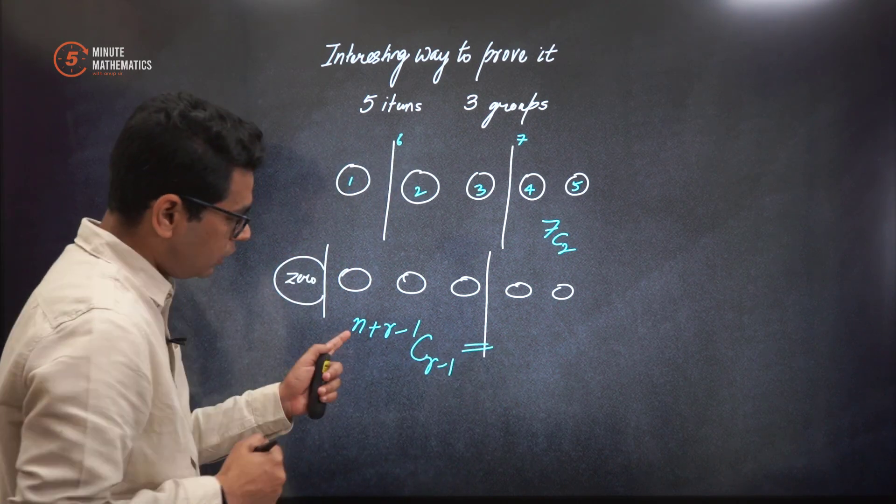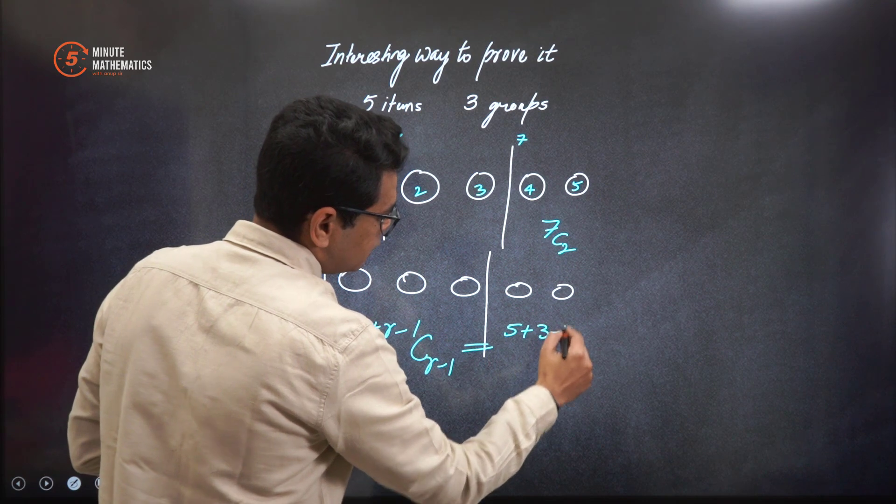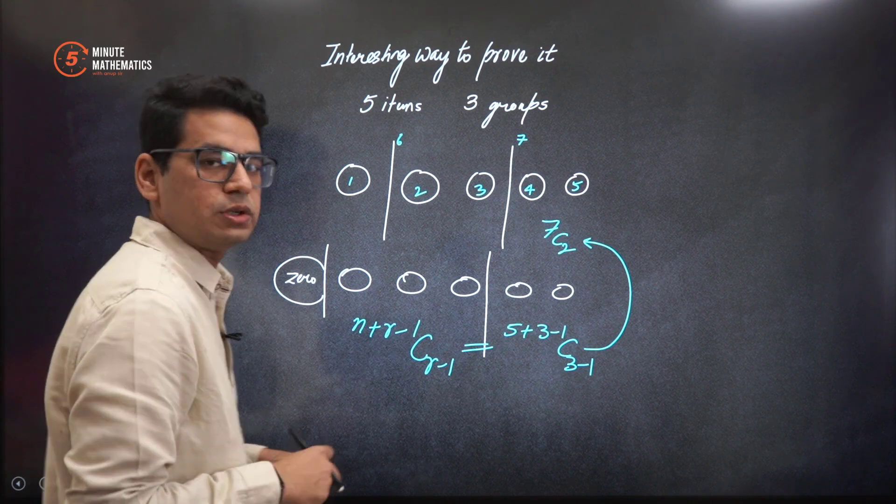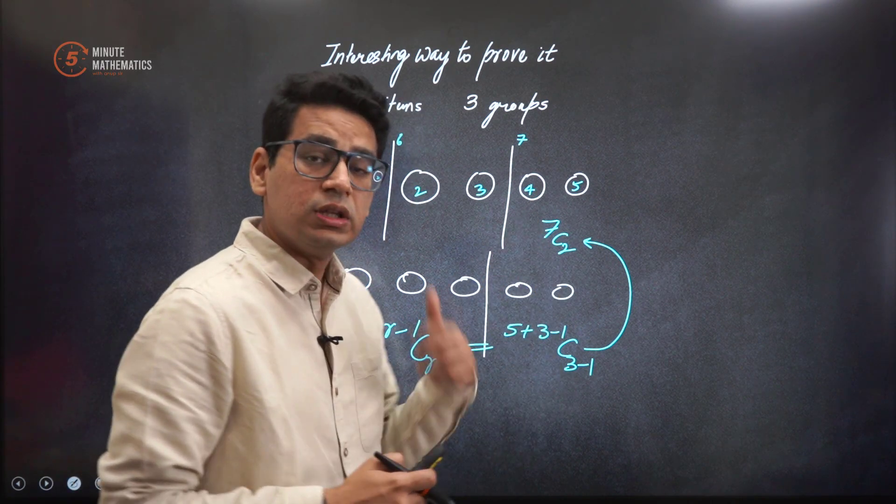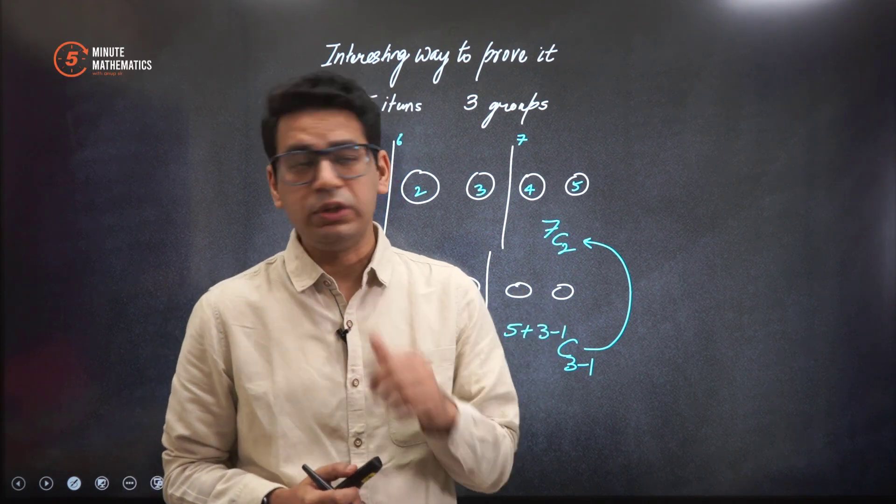So if you notice, this becomes what? N is 5 here, 3 minus 1, 3 minus 1, which reduces to this answer only: 7C2. This is how you can quickly remember whenever this type of problem comes into the examination.